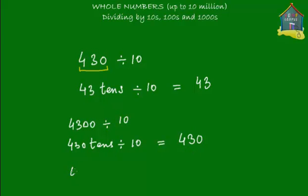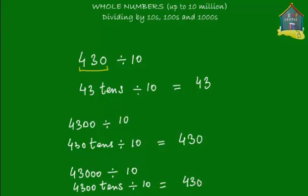Similarly, if you have 43,000 and that is to be divided by 10, you think of this in terms of tens. How many tens are there in 43,000? In 43,000 you have 4,300 tens. So you have 4,300 tens and that's to be divided by 10 — what you're left with is 4,300. So: 430 divided by 10 gives 43; 4,300 divided by 10 gives 430; and 43,000 divided by 10 gives 4,300.